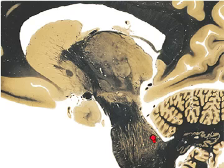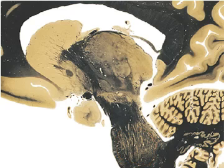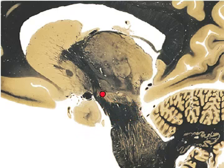We have the pons right here. And we have the cerebral peduncle right here. And just above that is the substantia nigra right there.